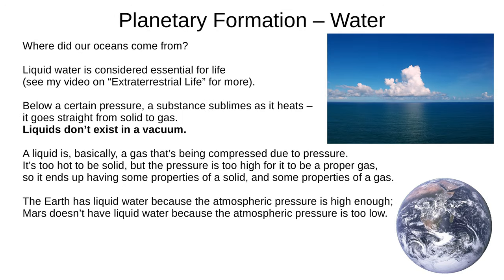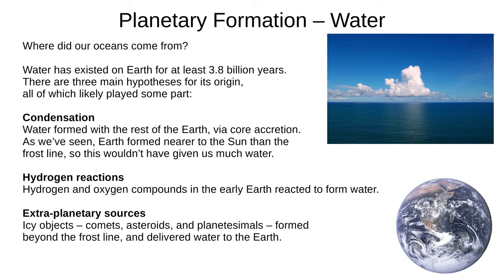Our last topic on the solar system is water. Liquid water is considered essential for life, as discussed in my video on extraterrestrial life. Below a certain pressure, a substance sublimes as it heats up — it goes straight from solid to gas. Essentially, in a vacuum, at zero pressure, liquids can't exist. Basically, a liquid is a gas compressed due to pressure — it's too hot to be a solid, but the pressure is too high for it to be a gas, so it ends up with some properties of a solid and some properties of a gas. The Earth has liquid water because the atmospheric pressure at the surface is high enough; Mars doesn't have liquid water because the pressure is too low. Earth has had liquid water for at least 3.8 billion years. There are three main hypotheses for its origin, and none can account for all of the Earth's water, so all are likely true to some extent.